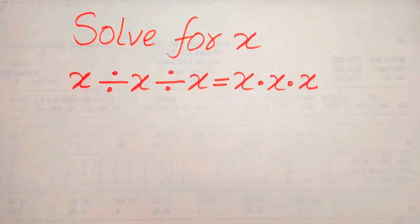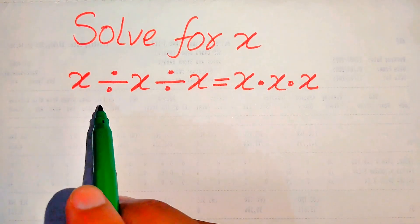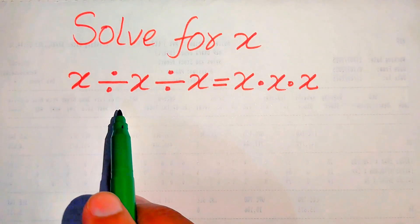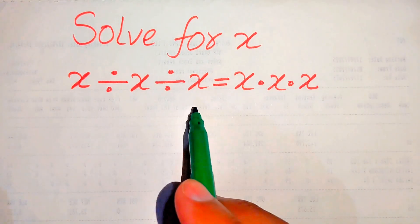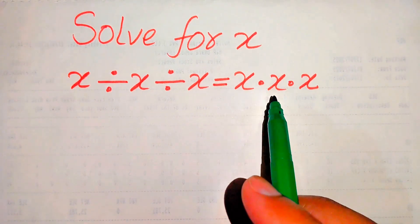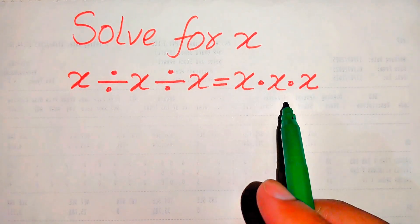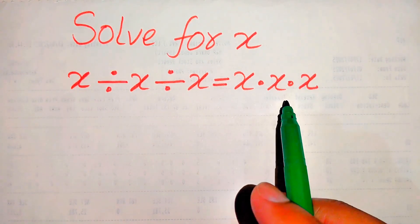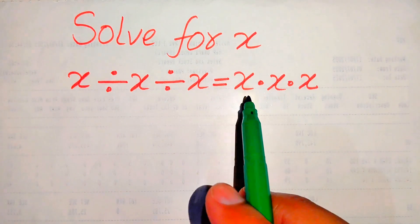Hello everyone, welcome to solve this nice math Olympiad algebra problem. Here we have x divided by x divided by x is equals to x multiplied by x multiplied by x, and we solve this problem for the values of x.